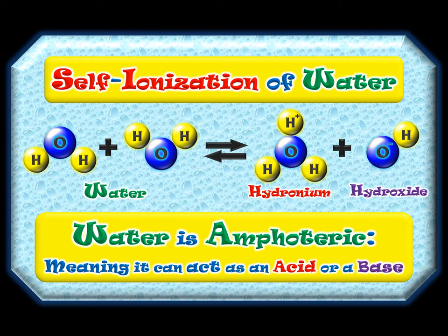Water cannot act as both acid and base at the same time. In the self-ionization of water, one molecule acts as the acid and the other acts as the base. The one with Mickey Mouse ears up — that's the acid, because it donated a proton. The one with ears down accepted the proton, acting as the base — and that's the one that becomes hydronium.